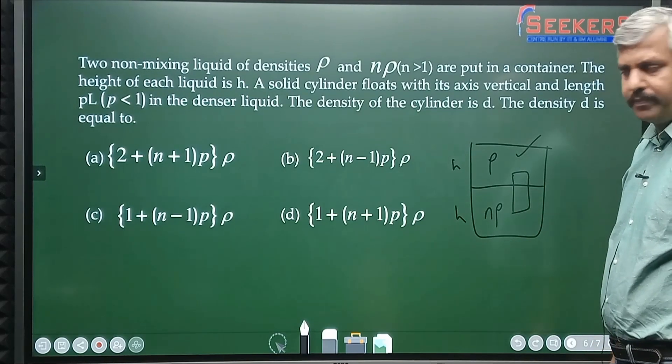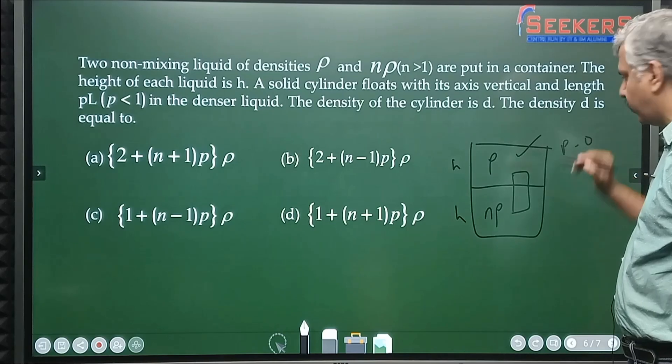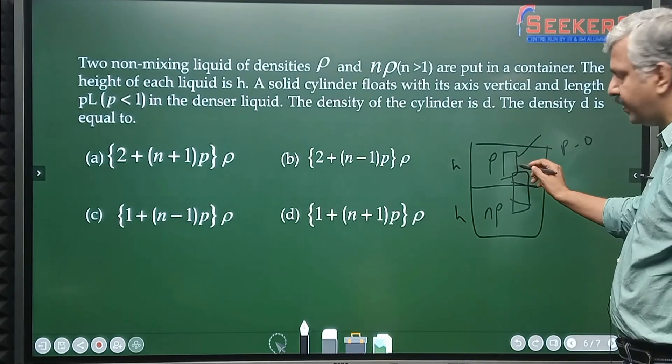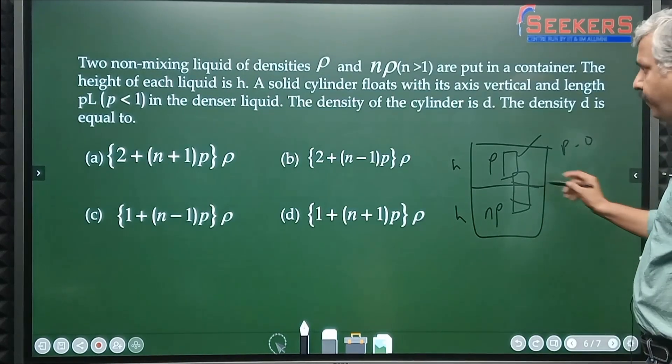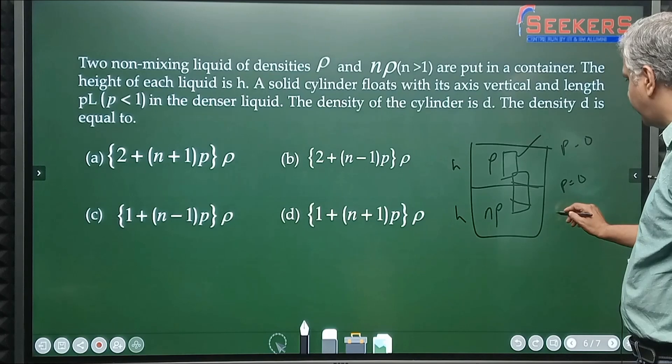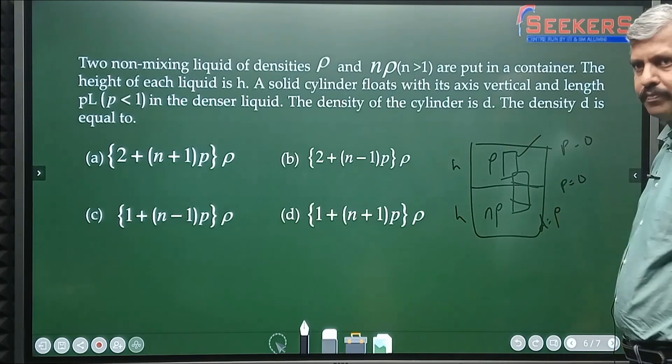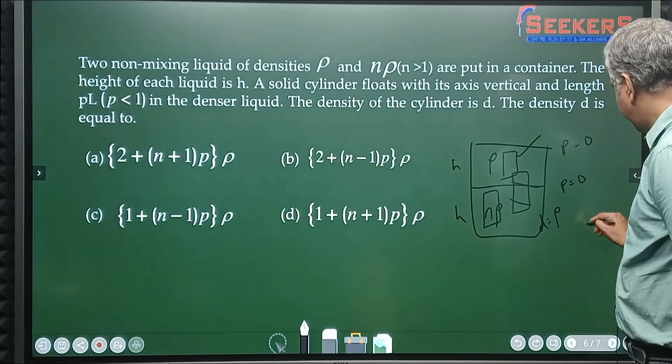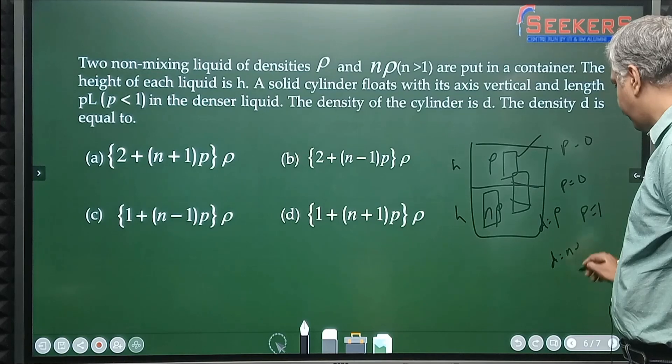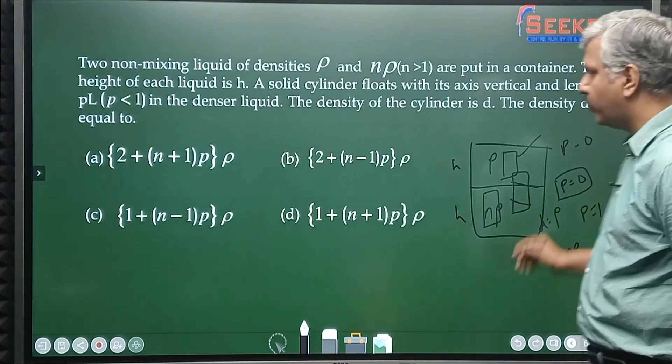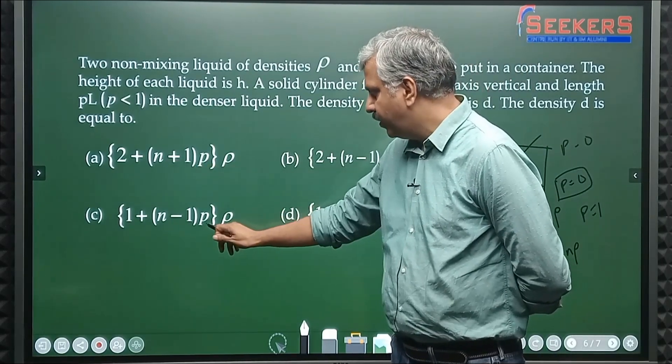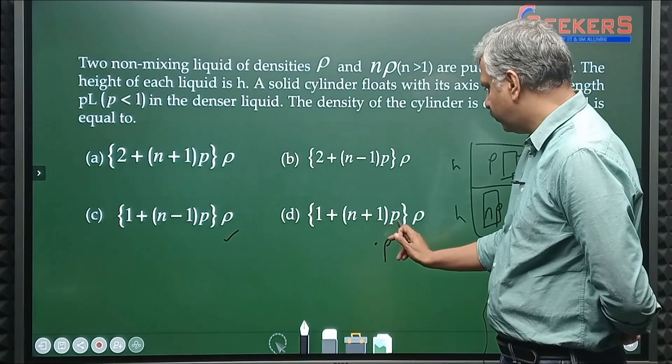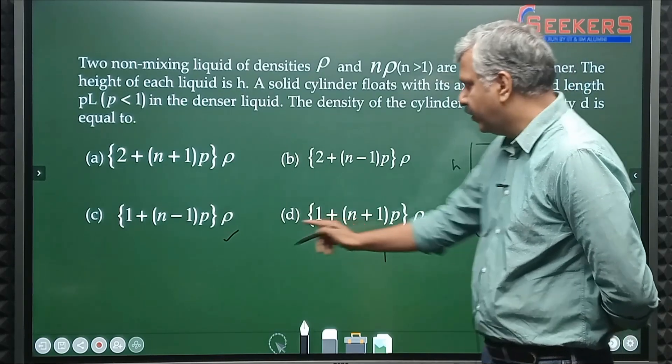Suppose p was equal to 0. That means the block is fully in this liquid. So if the block is fully in this liquid, then its density should be ρ, and the upper liquid's density should be ρ. So if p value is equal to 0, the density should be equal to ρ. Similarly, if p is equal to 1, that means the block is fully here. So if p is equal to 1, density will be equal to nρ. Let me do the substitution. Suppose p is equal to 0, if I substitute p equals 0, I will get ρ, so this can be correct.